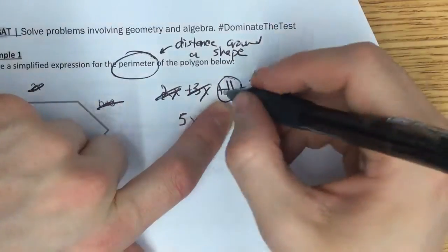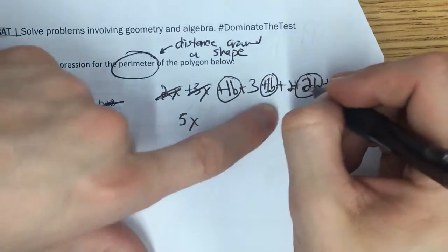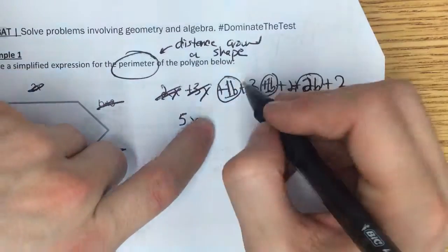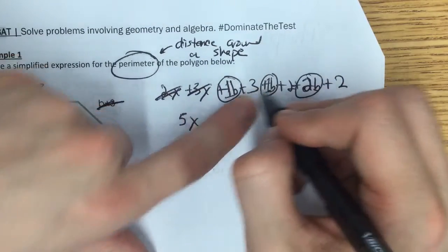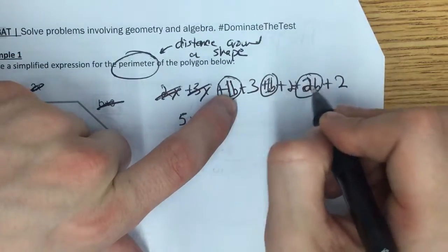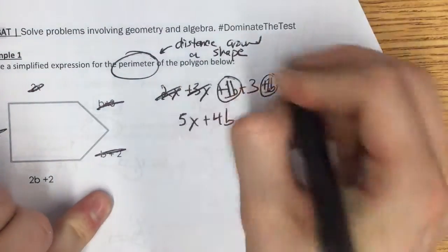So I have 1b, 1b, and 2b. 1b plus 1b, that gives us 2b, plus another 2b would have 4 total b's.